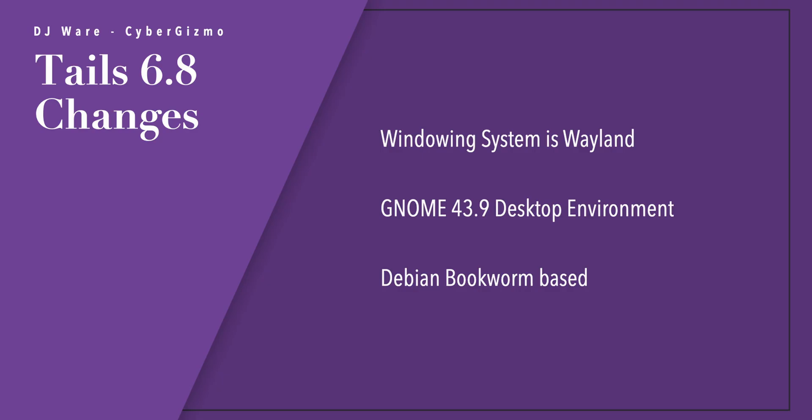Tails 6.8 uses the Tor Browser version 13.5.6. Persistent storage uses LUKS 2 for encryption by default. The window system is Wayland, and it uses GNOME 43.9 for the desktop environment — the same as Debian Bookworm, on which this is based.